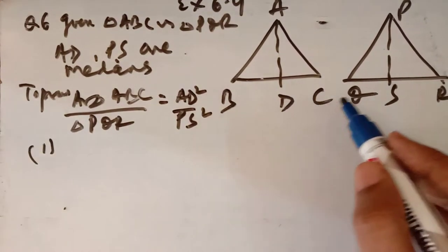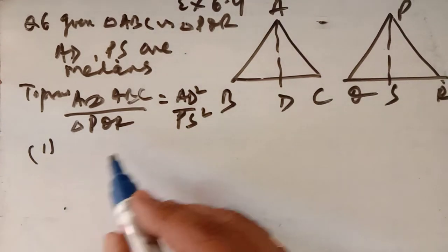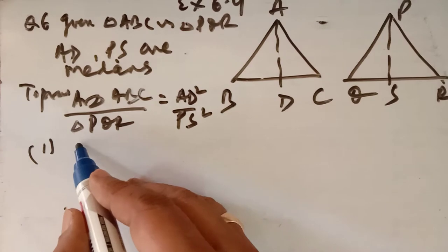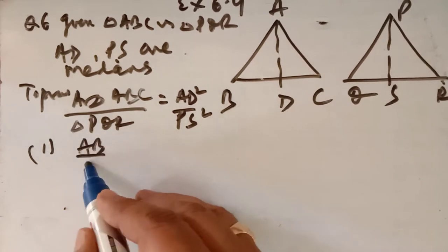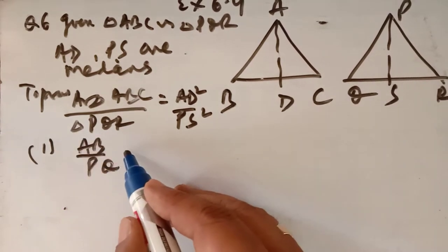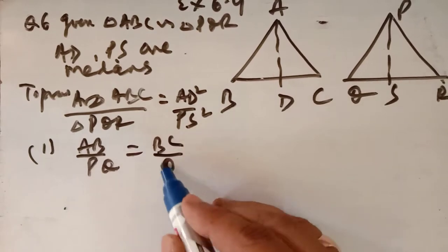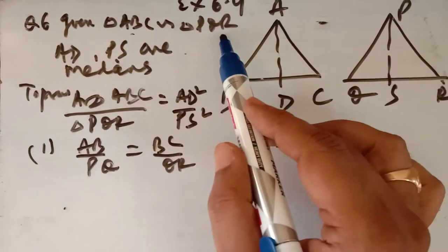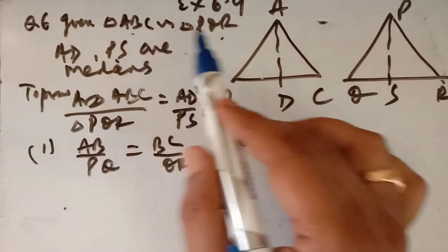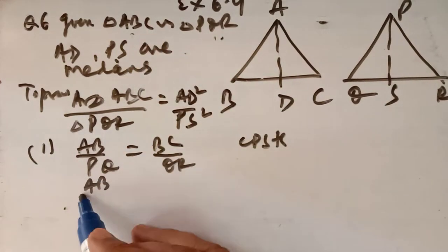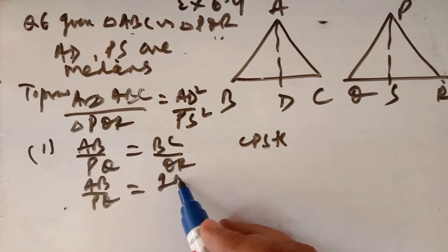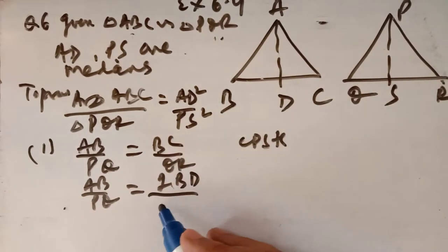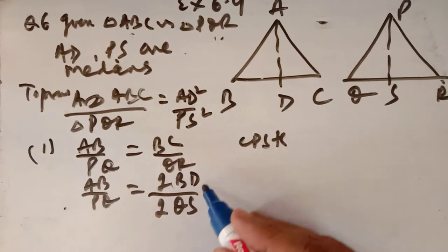We already proved in the last exercise that the ratio of sides equals the ratio of their corresponding medians. Because the triangles are similar, AB/PQ = BC/QR. In place of BC you can write twice BD, and in place of QR you can write twice QS.